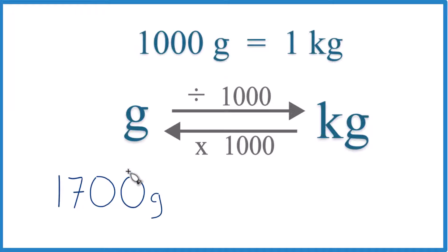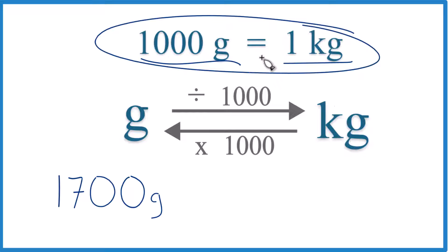In this video we're going to convert 1,700 grams to kilograms. And you need to know that there are 1,000 grams in one kilogram. This is our conversion factor. We need that to convert from grams to kilograms and kilograms to grams.